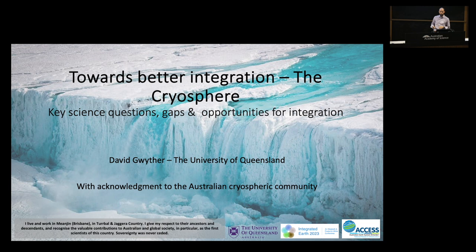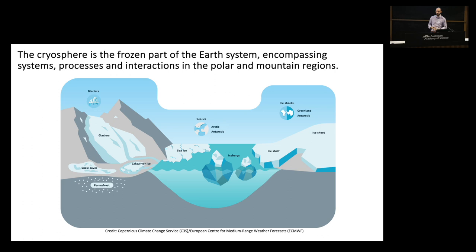Just so some of you don't need to go to Google, like Professor Possingham, to look at what the cryosphere is — I'll give you a quick overview. It's basically the frozen water part of the Earth system. It encompasses all those processes and interactions in the poles: the Arctic, Greenland, the South Pole, Antarctica, and also the mountain glacier regions, including the very small ice cap in Iceland.